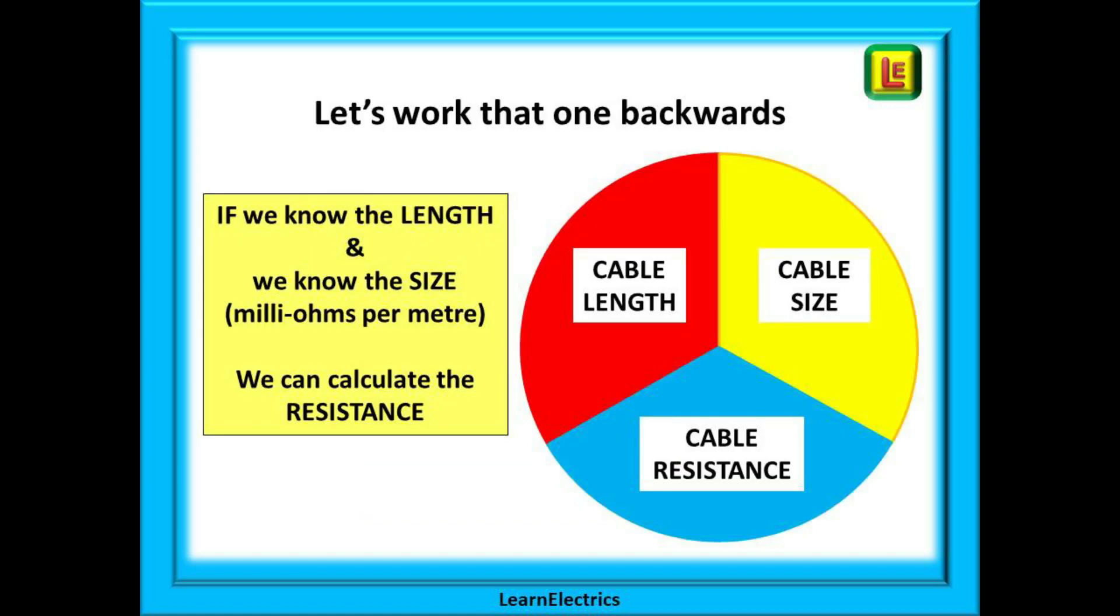We can work it backwards too. Look at our little circle again. If we know two values we can calculate the third. If we know the length and we know the size or cross sectional area then we can calculate what the resistance should be.